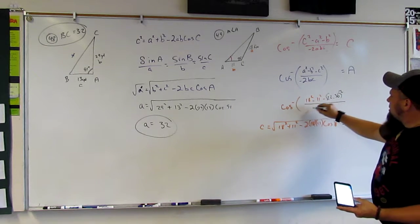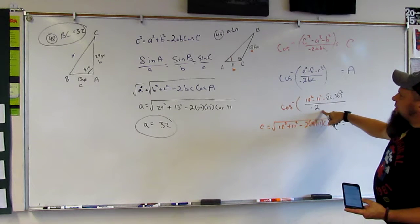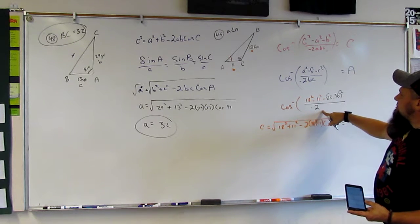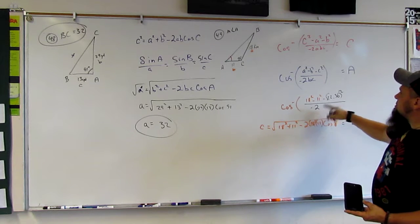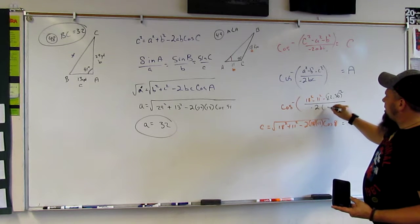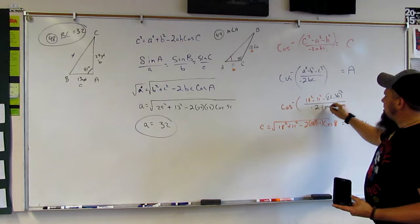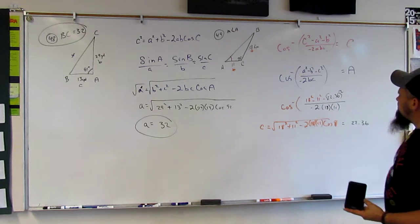So, this is going to be minus 22.36 squared, right, all over negative 2, right, times BC. So, B would be 18, and C would be 11.